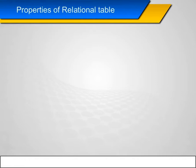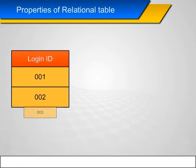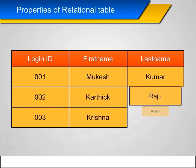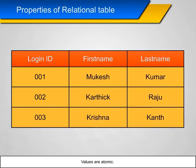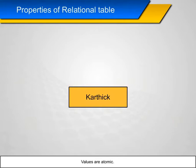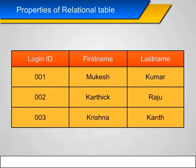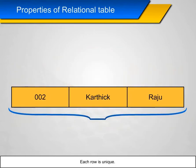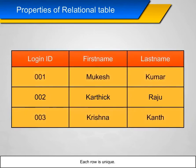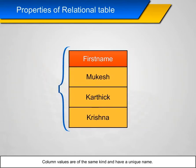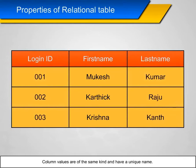Properties of a Relational Table: Values are atomic, each row is unique, and column values are of the same kind and have a unique name.